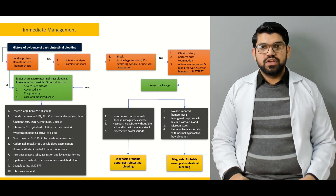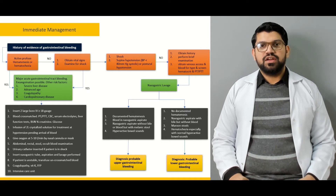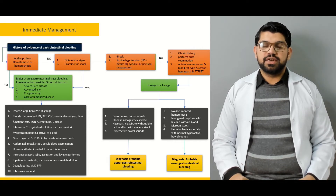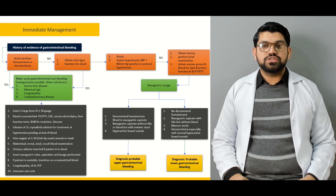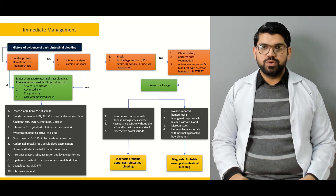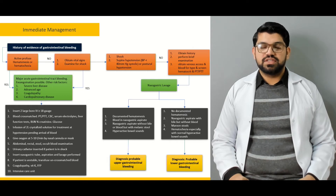Next we'll focus on immediate management and how to approach a patient with GI bleed — what to do first, what to look for, and what signs and symptoms indicate hemodynamic instability. When you receive a patient, what signs label them as shock, and once diagnosed with shock, what steps should be taken, what lab investigations should be sent, and what examination should be done while resuscitating.